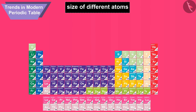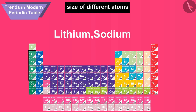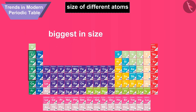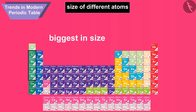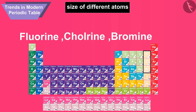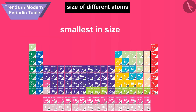Thus, in any period, the alkali metal atom like lithium, sodium, potassium, etc. is the biggest in size, whereas the halogen atom like fluorine, chlorine, bromine, etc. is the smallest in size.